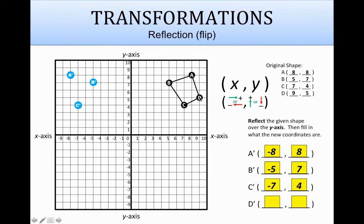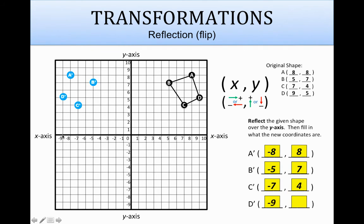Let's grab d prime and start up here on d. D is 9 units away on the right side, so d prime is going to be 9 units away on the left side. D is also the furthest point on that side, so it should be the furthest point on this side too. Coordinates for d prime: left 9, so negative 9, and then up 5, so positive 5.